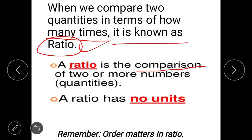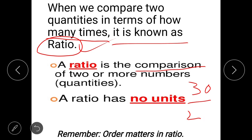A ratio has no units because in a ratio the units get cancelled. For example, if I write 30 meters upon 20 meters, the meter and meter will get cancelled, and I will get a quantity with no units. So ratio has no units.